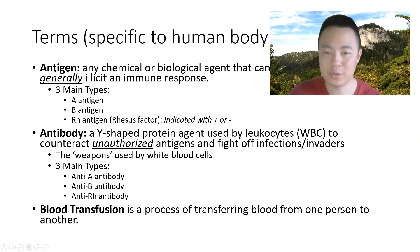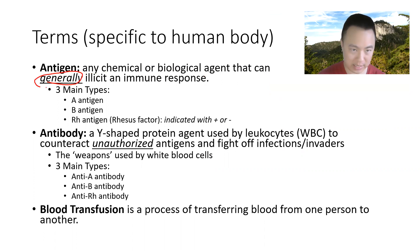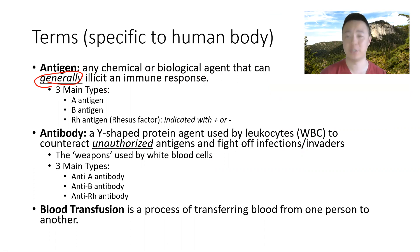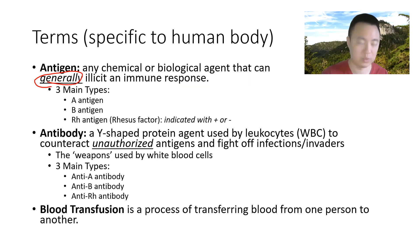Some terms I'd like to get out of the way first. The first one is antigen. An antigen is any chemical or biological agent that can generally elicit an immune response. When I use the word 'generally,' I mean in the general population — it doesn't necessarily mean that this particular antigen will elicit an immune response for that one person, but it might for another. Some people will respond to it, other people won't.